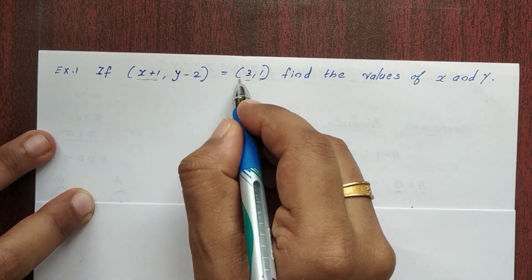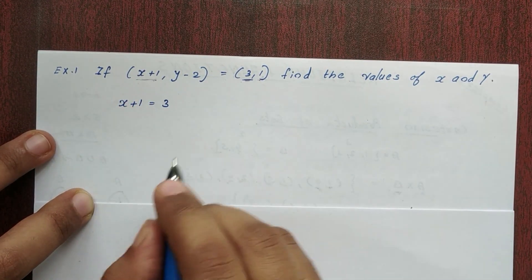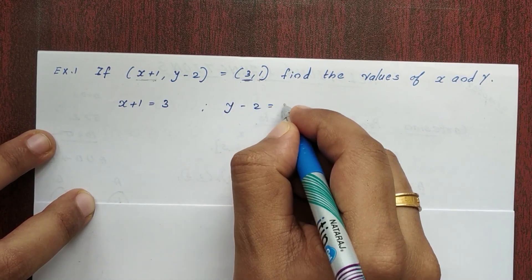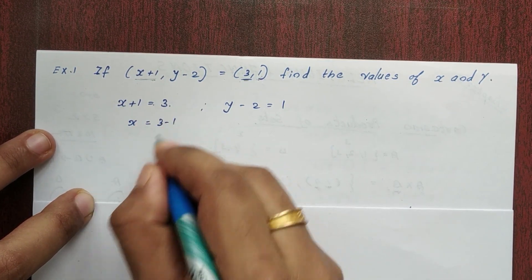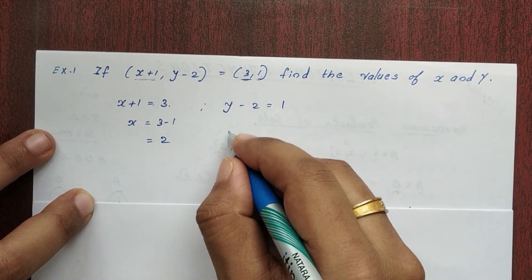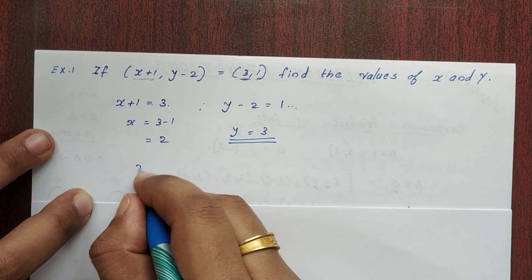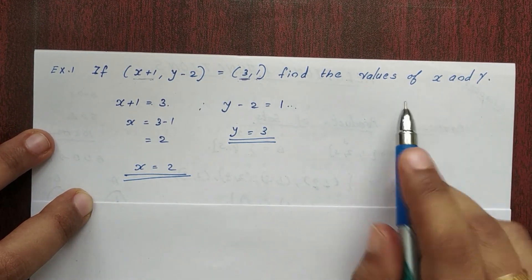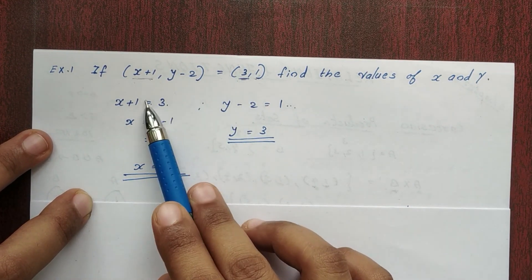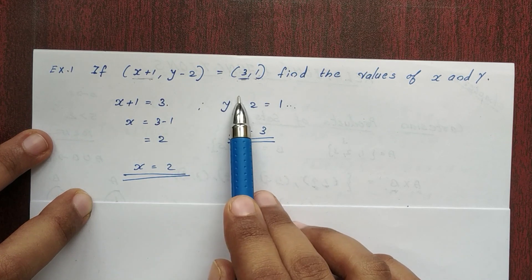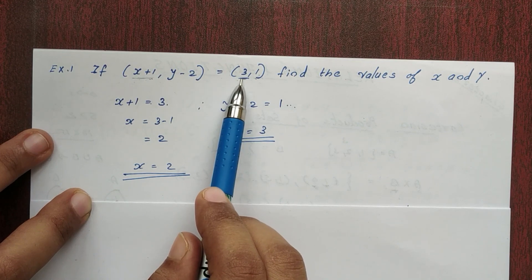So x+1 = 3, which means the first element of this ordered pair is equal to the first element of that ordered pair.